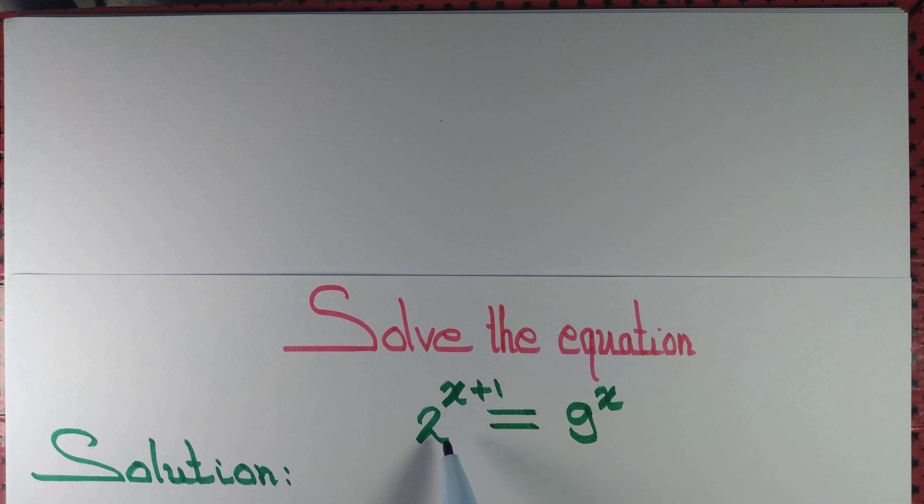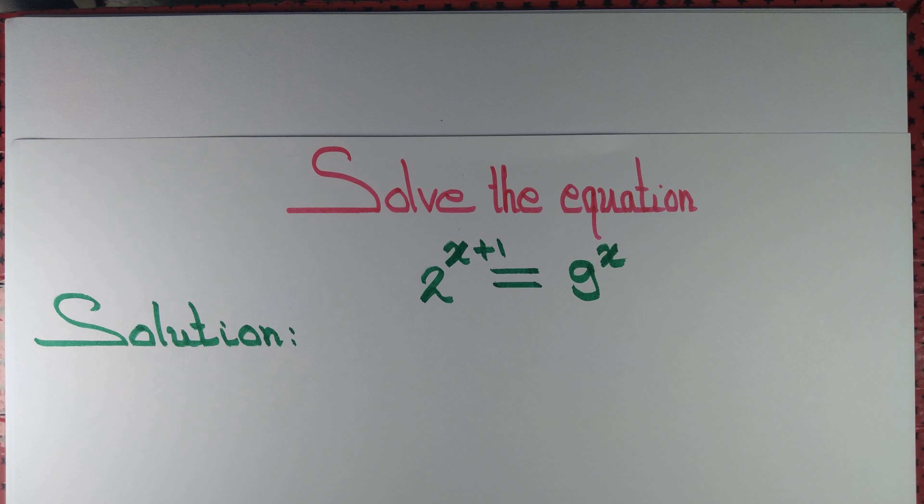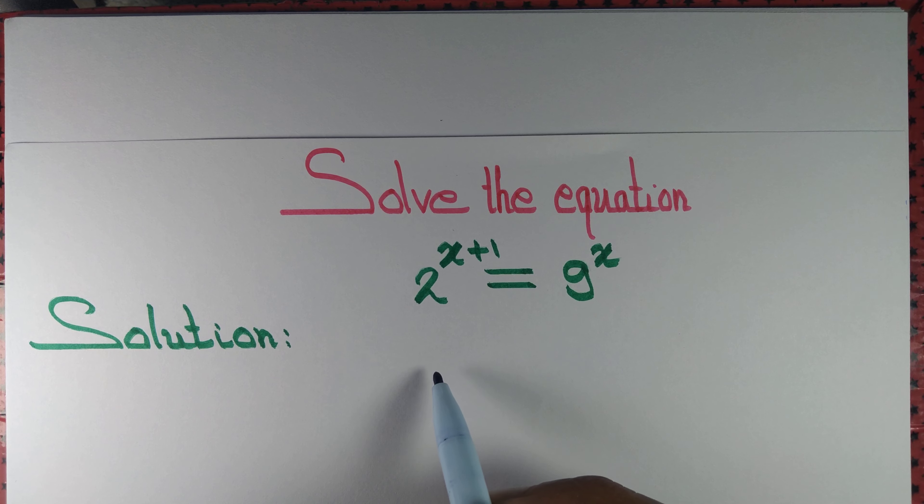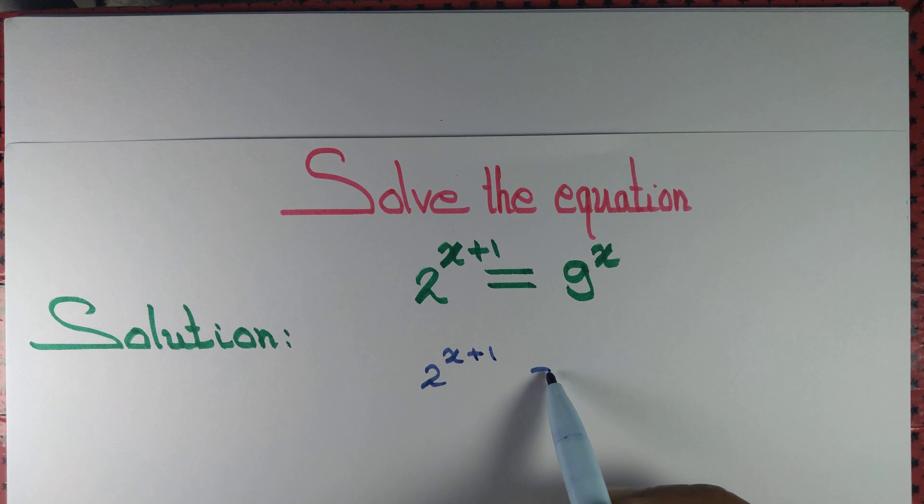Let us solve the equation 2 to the power x plus 1 equal to 9 to the power x. So we want to solve this equation. Let's write this equation that we want to solve: 2 to the power x plus 1 equal to 9 to the power x.